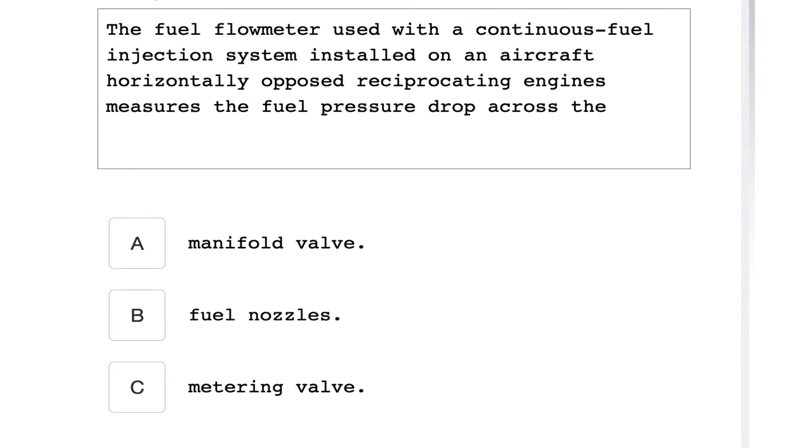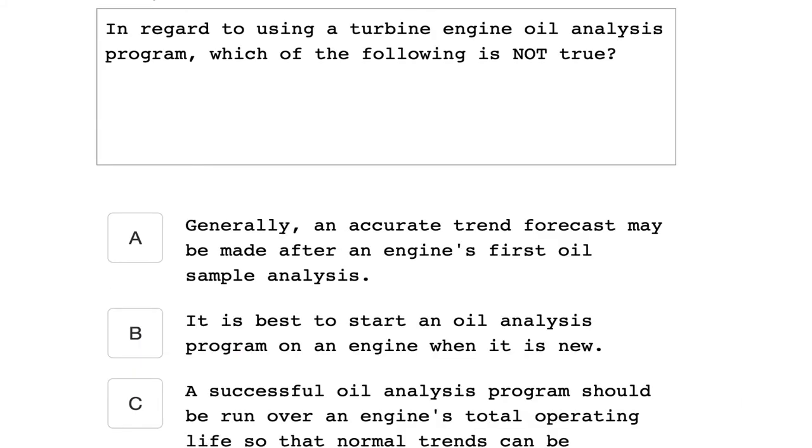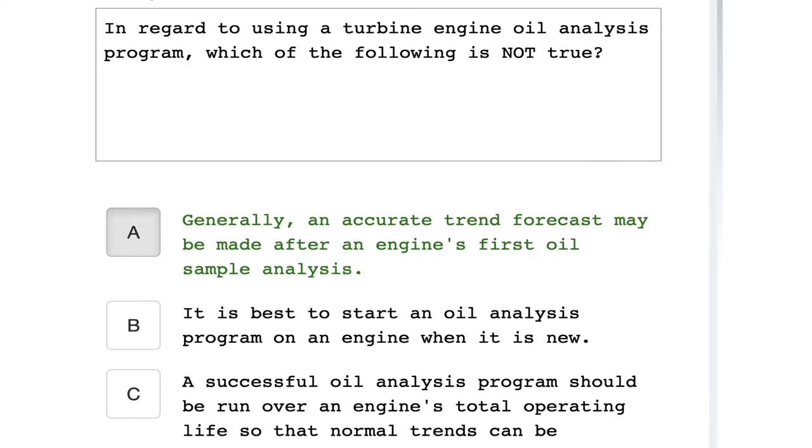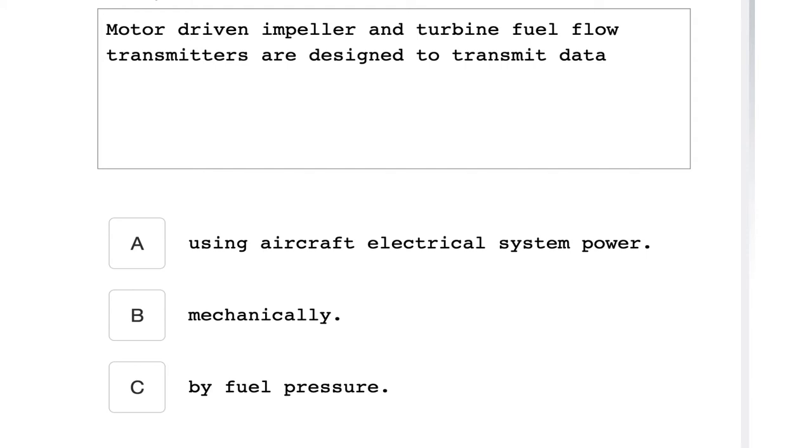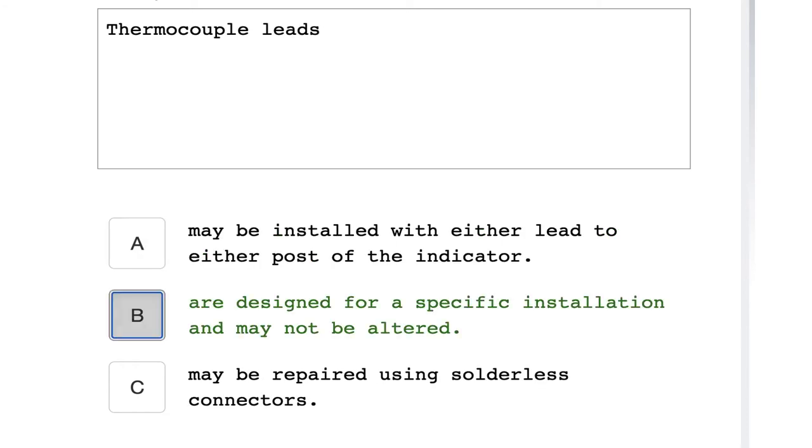The fuel flow meter used with a continuous fuel injection system installed on an aircraft horizontally opposed reciprocating engine measures the fuel pressure drop across the fuel nozzles. In regards to using a turbine engine oil analysis program, which of the following is not true: generally an accurate trend forecast may be made after an engine's first oil sample analysis. Motor driven impeller and turbine fuel flow transmitters are designed to transmit data using aircraft electrical system power. Thermocouple leads are designed for a specific installation and may not be altered.